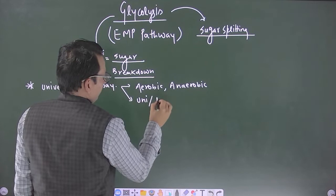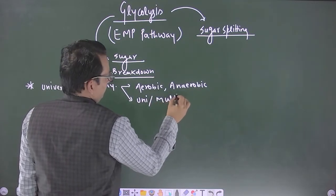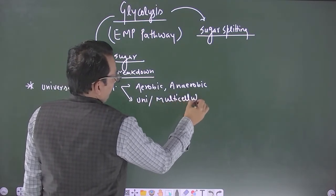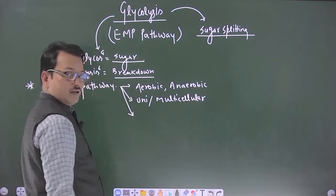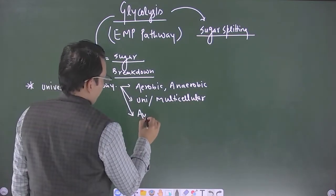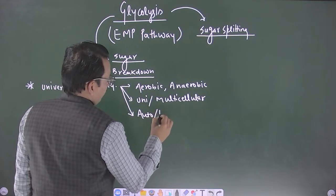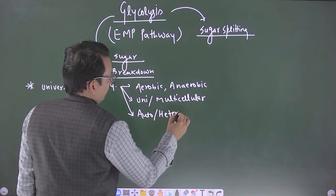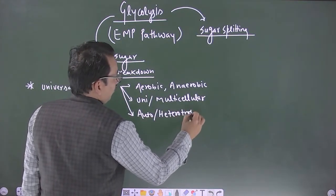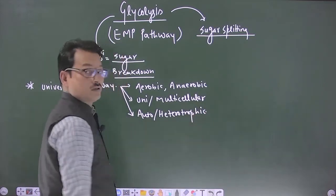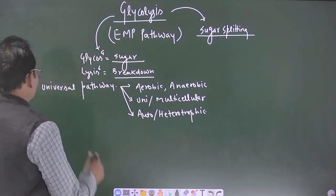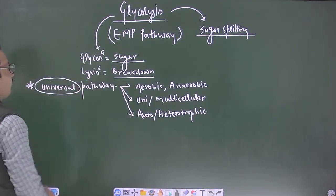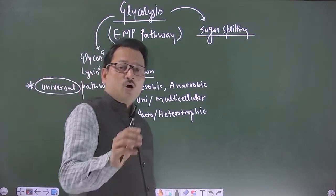And most importantly this organism may be autotrophic or heterotrophic. You will find this pathway in all the organisms. That is why we call this as universal pathway present in all the organisms.